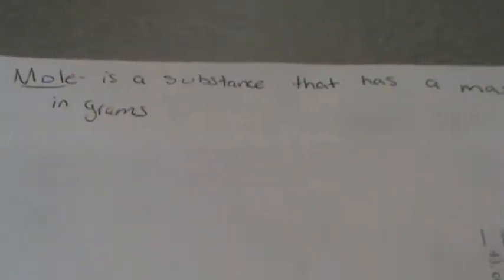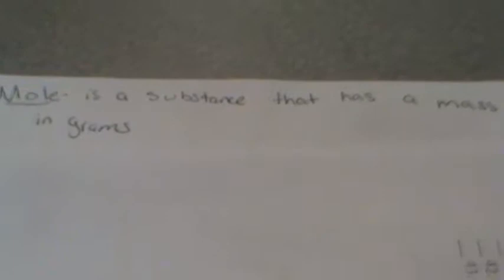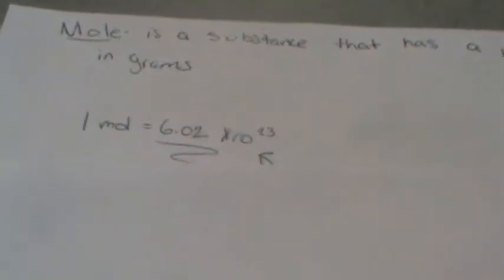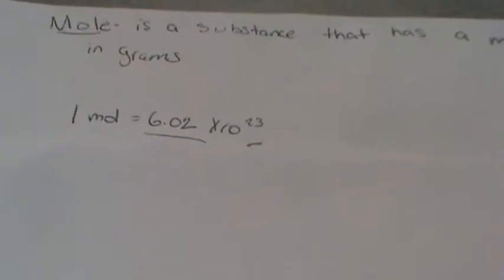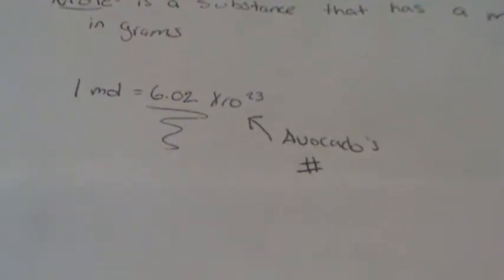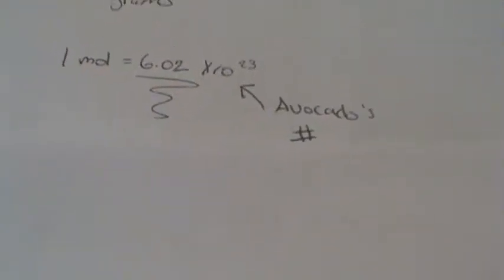So what is a mole? A mole is a substance that has a mass in grams. We could also write a mole as 6.02 times 10 to the 23rd. We could rewrite this number as Avogadro's number.